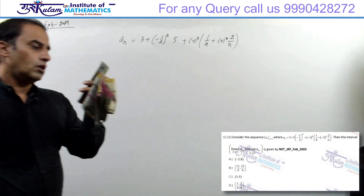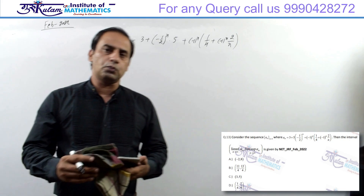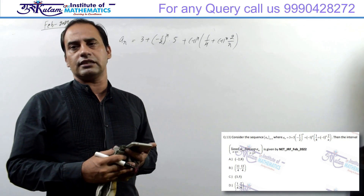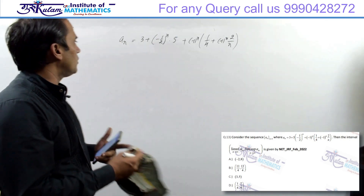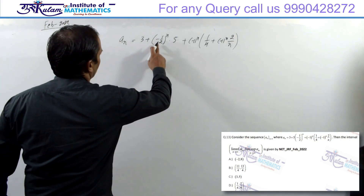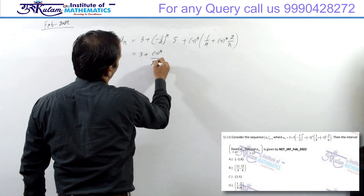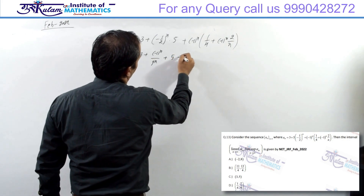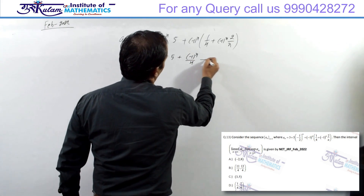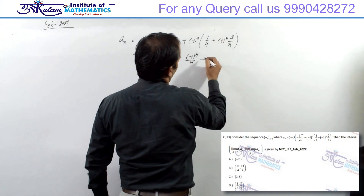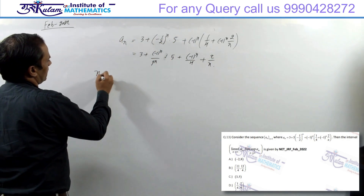यह दिया होगा आपको और आपको find करना है limit superior और inferior क्या होगा। Limit superior is the largest limit point और limit inferior is the smallest limit point। उस concept का use करेंगे तो मेरे पास basically है: (3 + (-1)^n / 2^n) into 5, plus (-1)^n / 4, plus 2/n — as n tends to infinity।